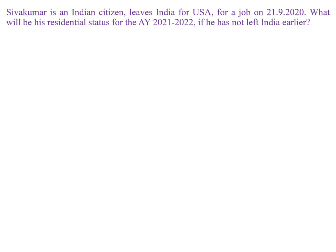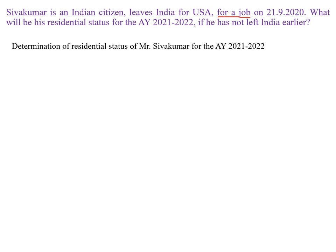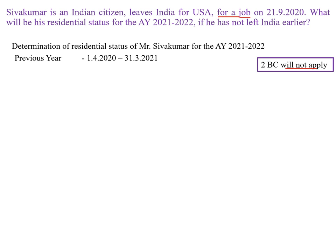I will explain with one more example. Shivakumar is an Indian citizen who leaves India for USA for a job on 21-9-2020. What will be his residential status for the assessment year 21-22 if he has not left India earlier? As usual, we give the title — Determination of Residential Status. Then we check whether this person comes under the exempted category. He has left India for a job, and job comes under employment, so the second basic condition will not apply for him — there is only one basic condition. After deciding that, write down the previous year and start calculating the period of stay.